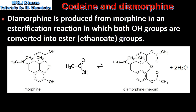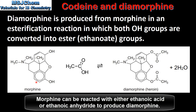Next we look at the synthesis of diamorphine. Diamorphine is produced from morphine in an esterification reaction in which both hydroxyl groups are converted into ester groups. In this reaction morphine is reacted with ethanoic acid to produce diamorphine and water.